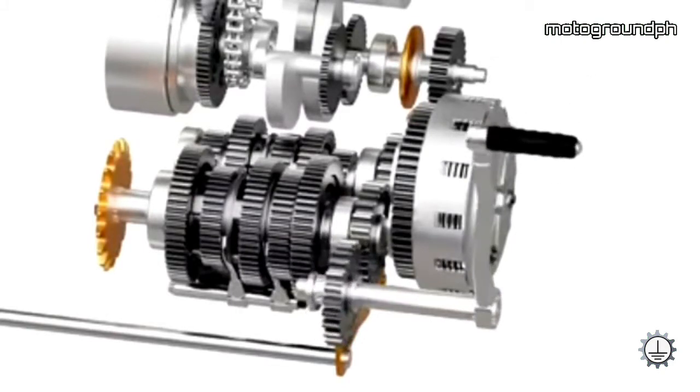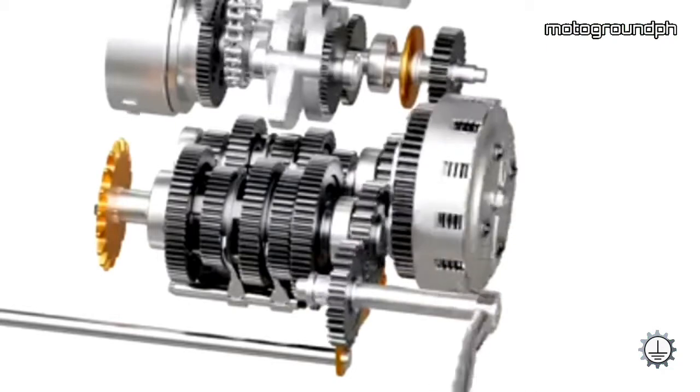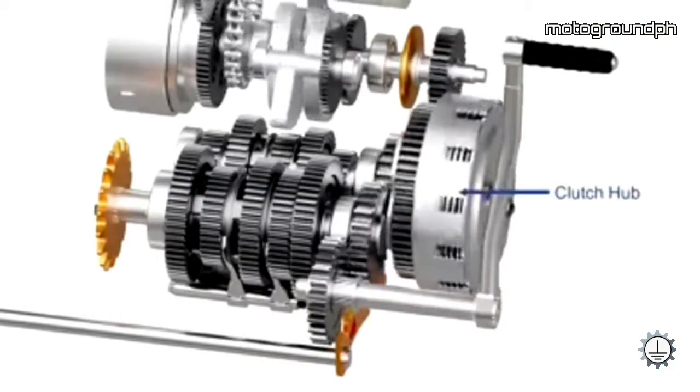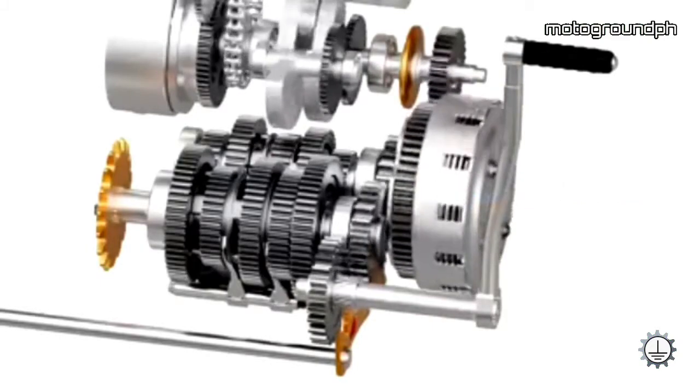As the kickstarter lever is descended, a helical spline forces the gear to slide and engage with a freewheeling gear on the main shaft. As the lever is descended further, the gear spins on its axis and transfers the power to the clutch hub. The clutch hub transfers the power to the crankshaft and eventually to the engine.